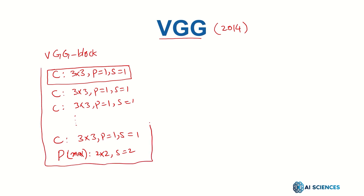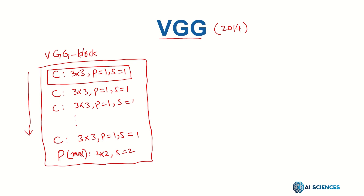The max pool with stride two means the spatial dimensions of the input tensor actually halve. That is a VGG block: convolution, convolution, convolution, then a max pool. In different blocks the number of convolution layers may vary — for example, the first block might have two convolution layers followed by a max pool, the second might have three, and so on.